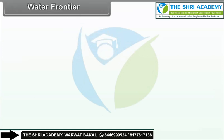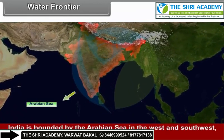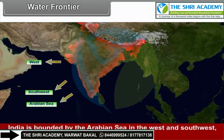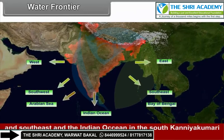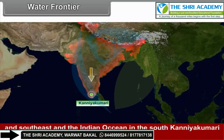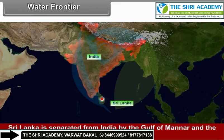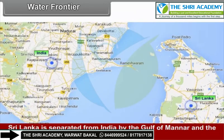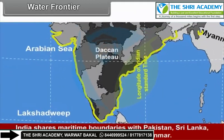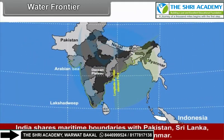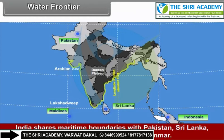Water Frontier: India is bounded by the Arabian Sea in the west and southwest, the Bay of Bengal in the east and southeast, and the Indian Ocean in the south. Kanyakumari is the southern tip of the Indian Peninsula. Sri Lanka is separated from India by the Gulf of Mannar and the narrow channel of Palk Strait. India shares maritime boundaries with Pakistan, Sri Lanka, Maldives, Indonesia, Bangladesh, and Myanmar.